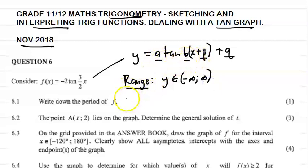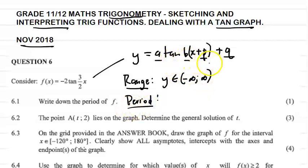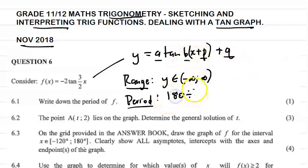'b' talks about the period of our graph. The graph of y equals tan x has a period of 180 degrees — that means it repeats itself every 180 degrees. So when you are working out the period of a tan graph, we say 180 degrees divided by b.